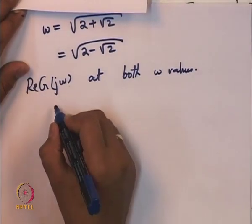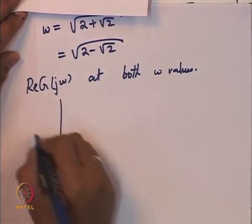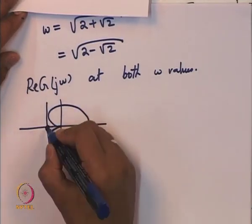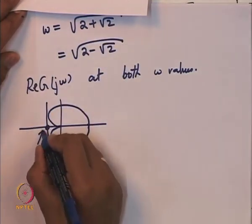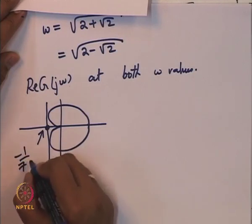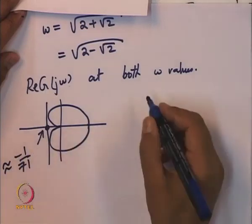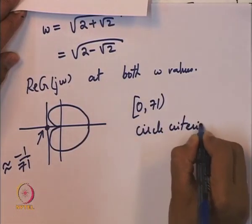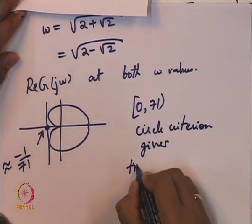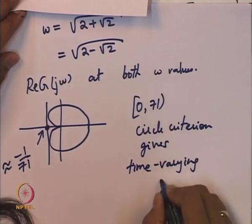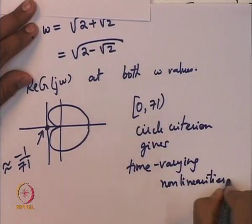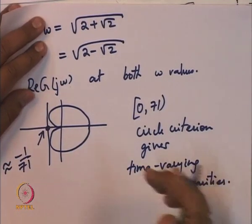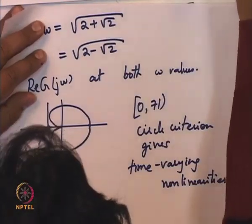Assuming this routine calculation is carried out, the procedure will give us the leftmost point of the Nyquist plot, and once we get this point we know the largest sector. Suppose this turns out to be approximately −1/71. Then from 0 to 71, the circle criterion gives stability for time-varying nonlinearities in this sector.